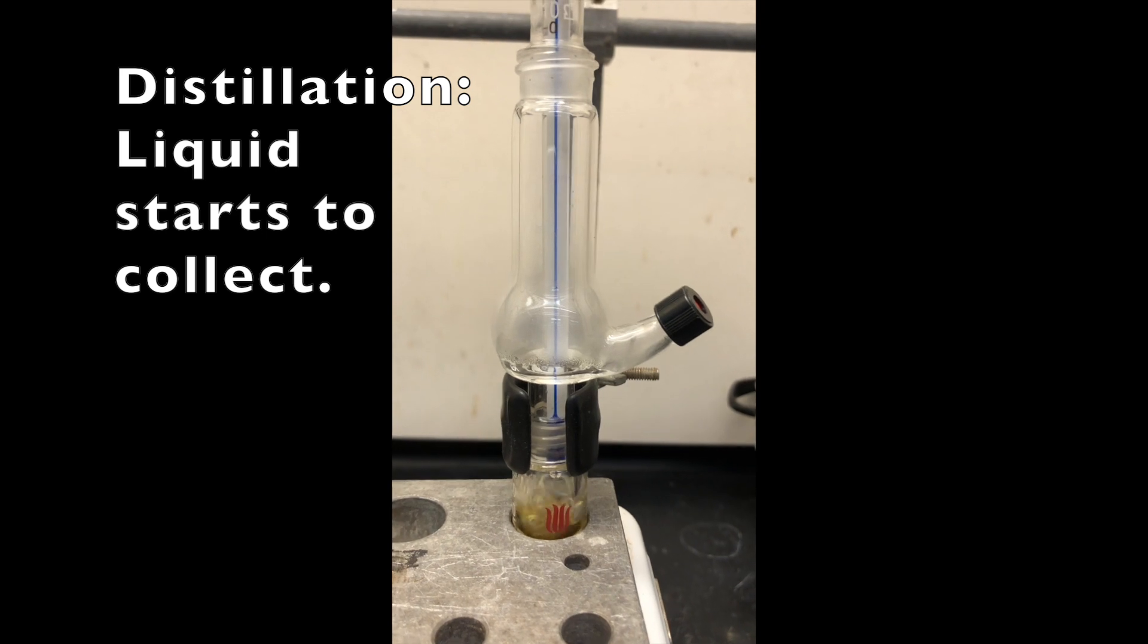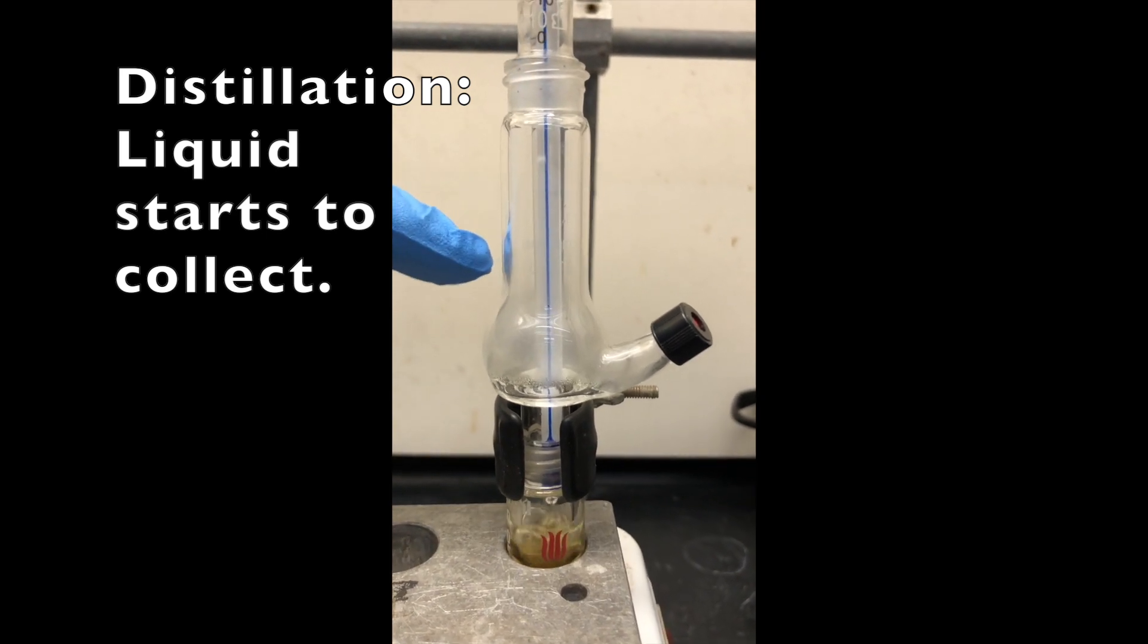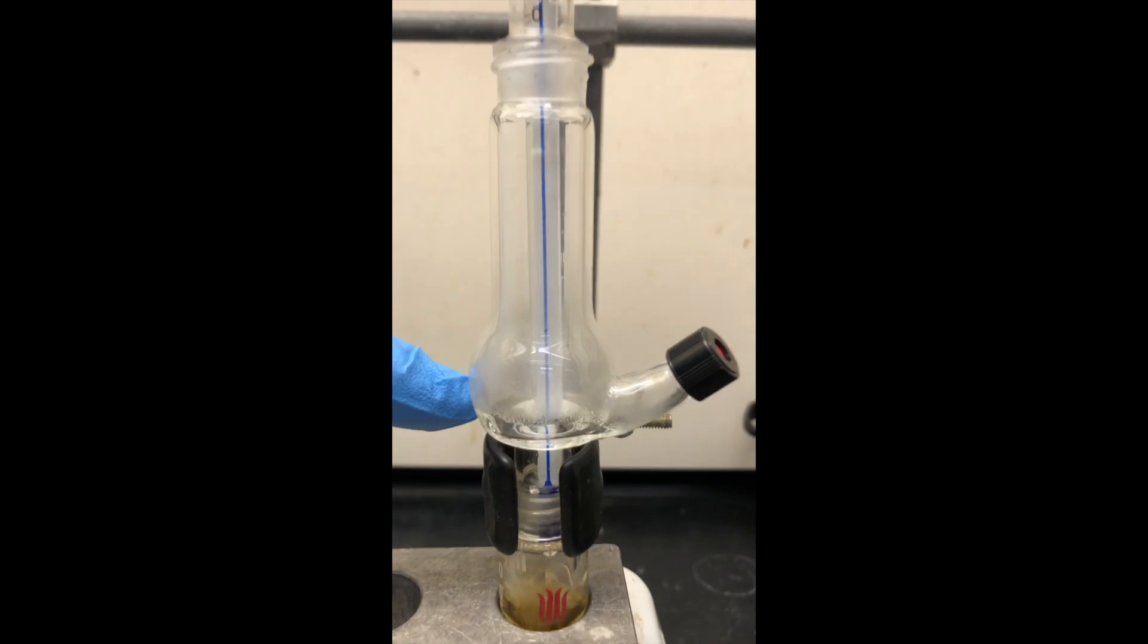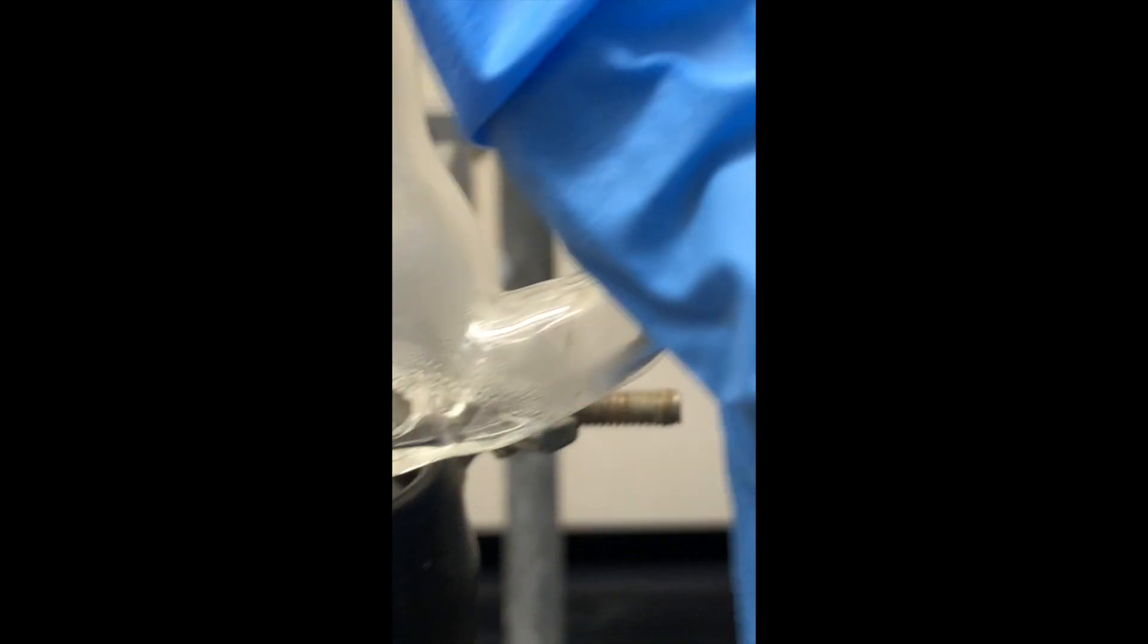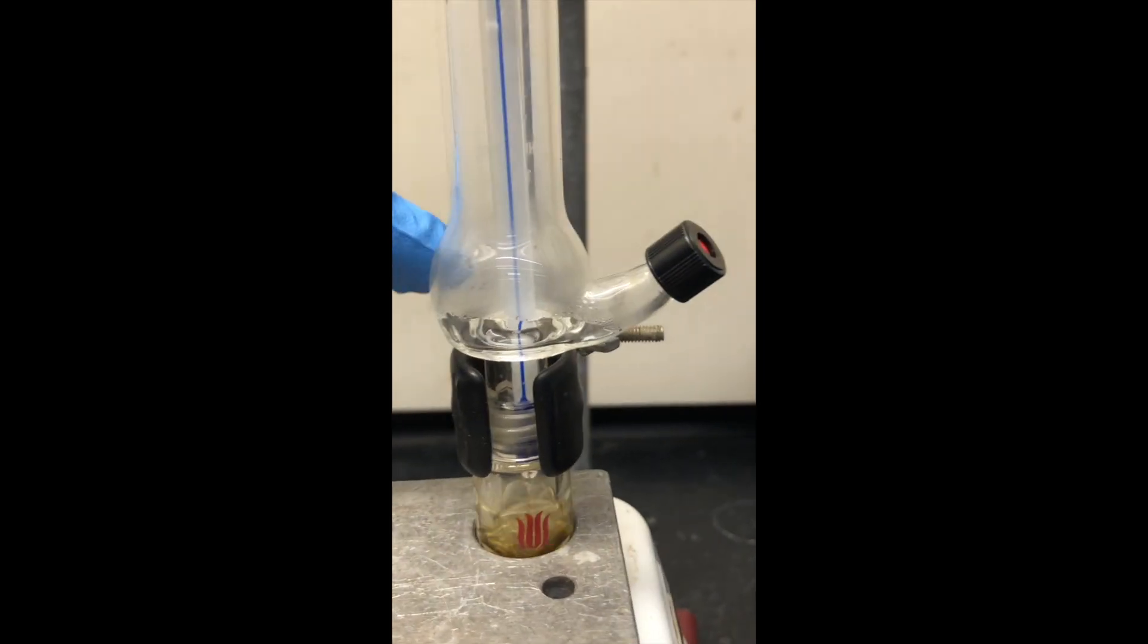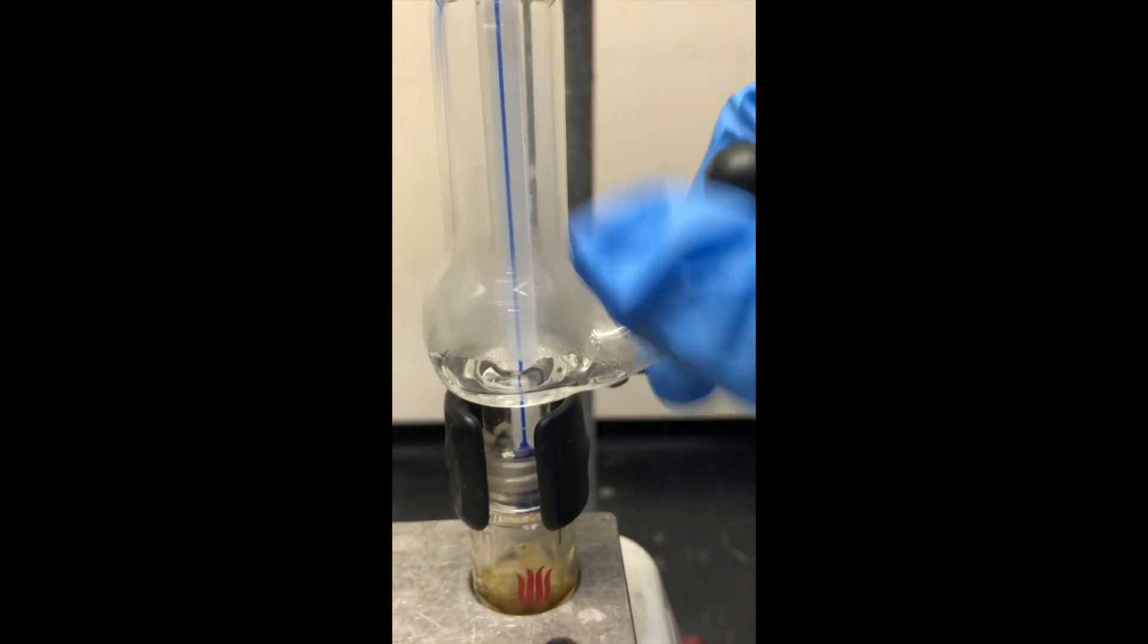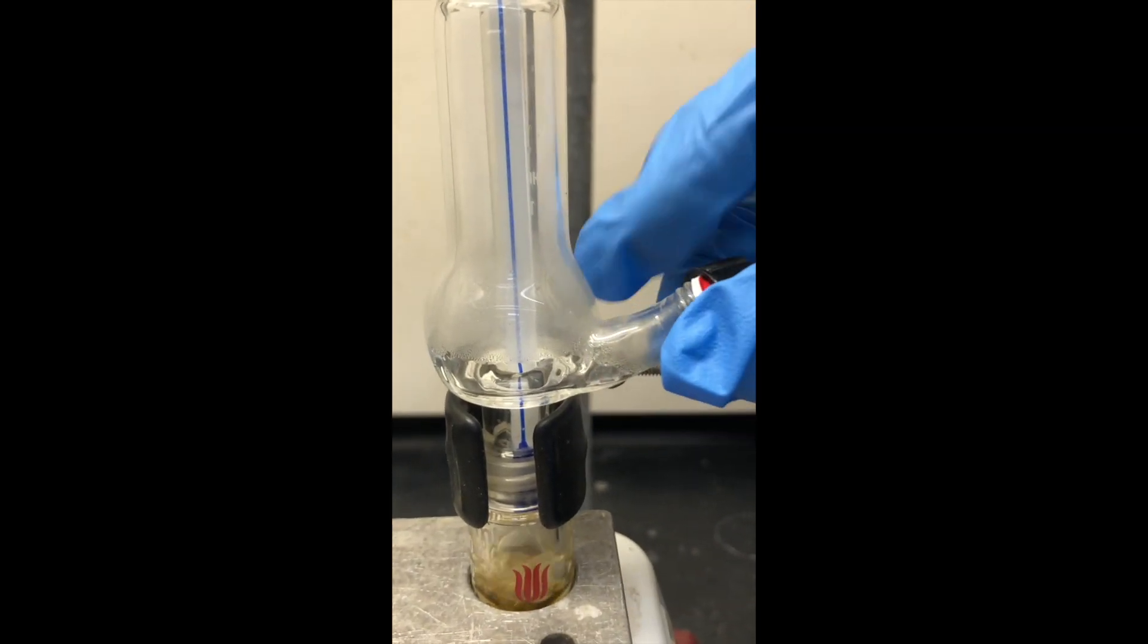Now it's refluxing much better. You can see it's starting to fog up the sides here and now it's starting to collect there. You can see very clearly that it's starting to collect and we're going to need to remove from the side port very quickly here. What we don't want is that the well fills up and starts to dribble back because then we're just having to re-distill it again.